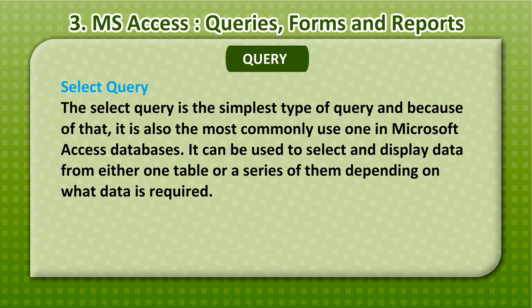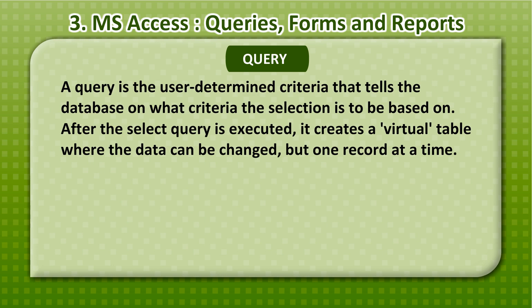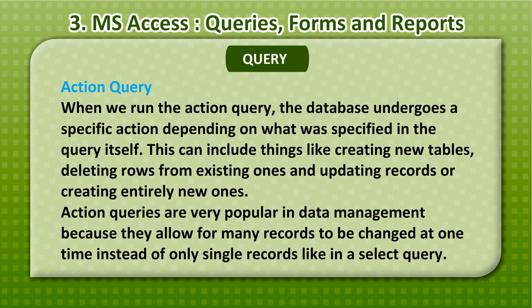The Select Query is the simplest type of query and because of that, it is also the most commonly used one in MS Access databases. It can be used to select and display data from either one table or a series of them depending on what data is required. A query is the user-determined criteria that tells the database on what criteria the selection is to be based on. After the Select query is executed, it creates a virtual table where the data can be changed but one record at a time.